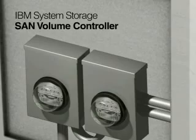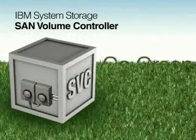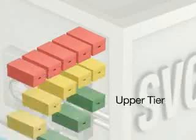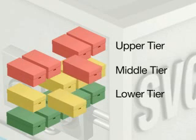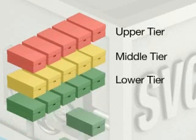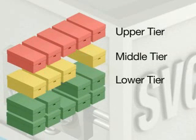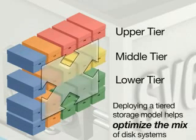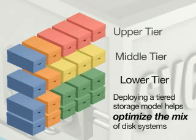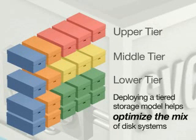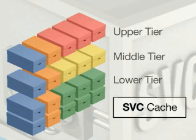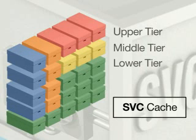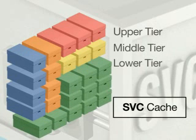IBM System Storage SAN Volume Controller can help your data center go green in several ways. Storage virtualization with SVC helps you make more efficient use of your existing infrastructure, control growth, replace inefficient devices, better deploy different types of storage, and move data between disparate systems. Deploying a tiered storage model helps optimize the mix of disk systems. And because SVC cache helps improve the performance of lower level storage, you may be able to shift the workload balance toward those more energy-efficient systems.